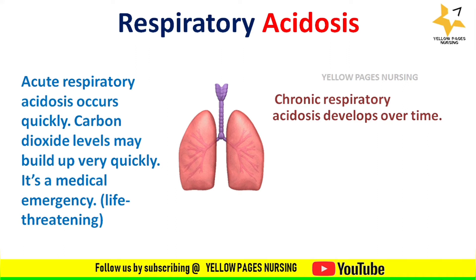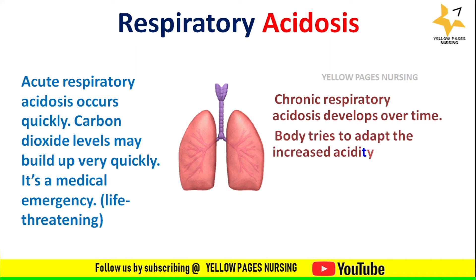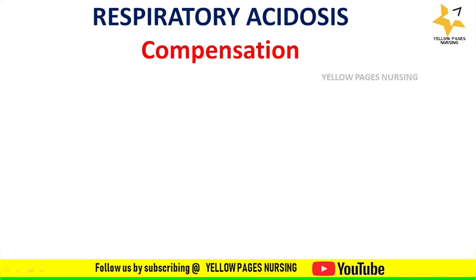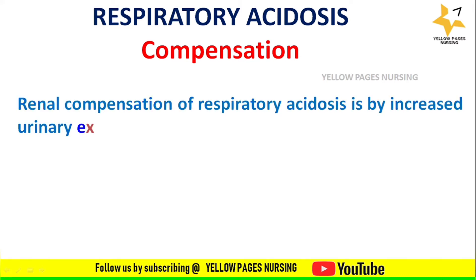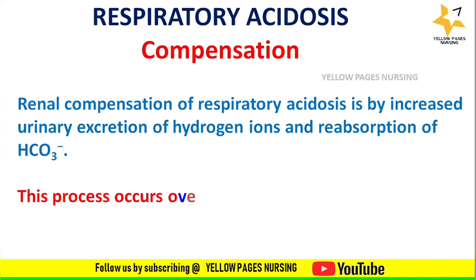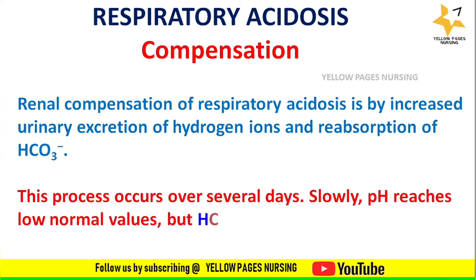Chronic respiratory acidosis develops over time. The body tries to adapt to the increased acidity; for example, the kidneys produce more bicarbonate to help maintain body balance. Renal compensation of respiratory acidosis involves increased urinary excretion of hydrogen ions and reabsorption of bicarbonates. This process occurs over several days; slowly the pH reaches normal values but bicarbonate levels remain increased.